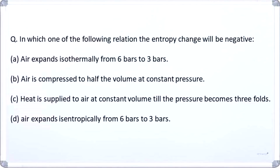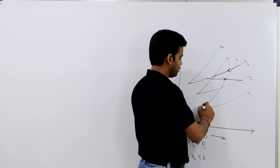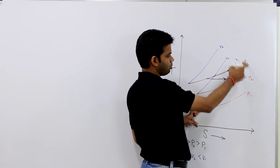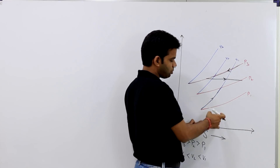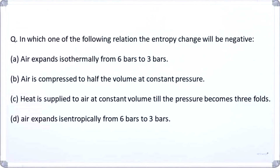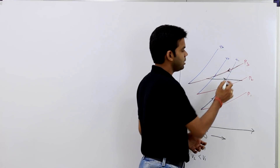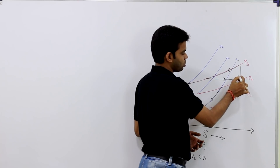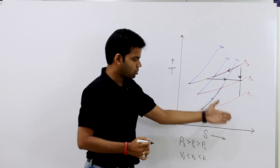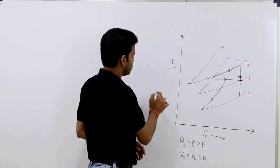We will still analyze the remaining two options. The third option says heat is supplied at constant volume till pressure becomes threefold — constant volume, increasing pressure — and entropy is also increasing. The fourth option says air expands isentropically from 6 bar to 3 bar. Isentropically means entropy remains constant. So there is only one option in which entropy is decreasing, confirming the answer is B.